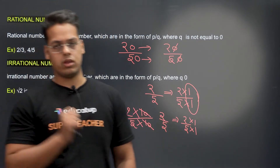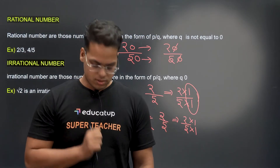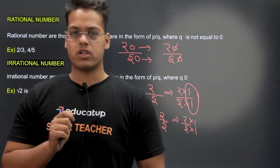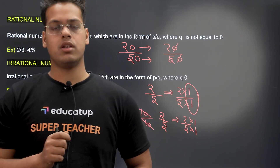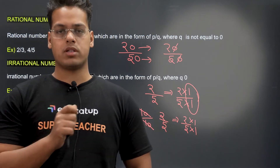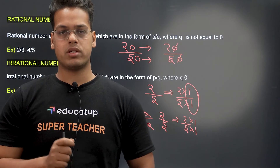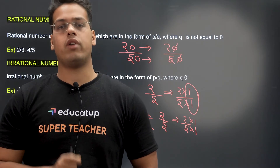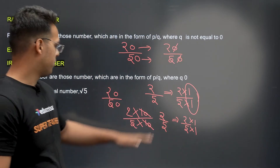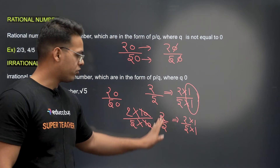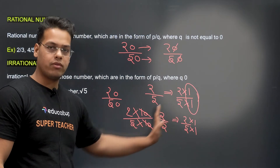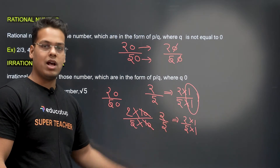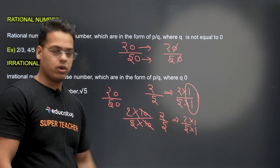So you have to note two things about co-prime numbers. The first one is: co-prime numbers are those numbers which do not have any common factor except 1. For example, in 2 upon 5, we don't have any common factor except 1.